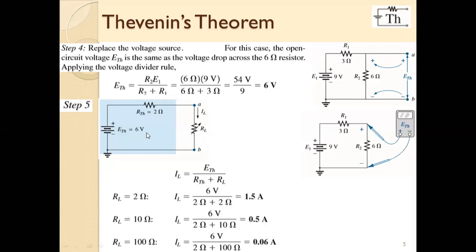Step number five is the concluding step: place these two components, ETH and RTH, in series with each other. By this way you can replace that complex network into the simplest network. If there is any external component, you can place it back on its original position. So these are the five procedural steps in which you can convert any network into a Thevenin equivalent network.